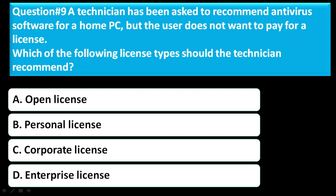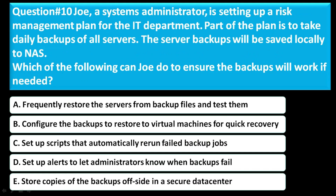Question number 9: A technician has been asked to recommend antivirus software for a home PC, but the user does not want to pay for a license. Which of the following license types should the technician recommend? Option A is open license, Option B is personal license, Option C is corporate license, Option D is enterprise license. The correct answer is Option A — open license.